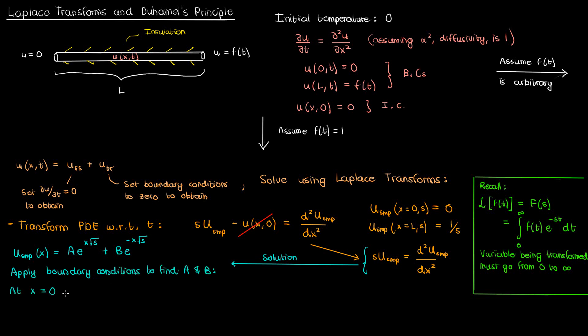At x equals zero capital U sub SMP is zero, so substituting that in gives us the following. Now at x equals zero, both the exponentials are just one, so that means a plus b is zero.